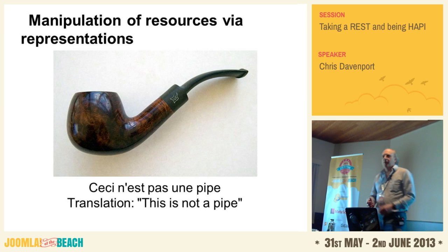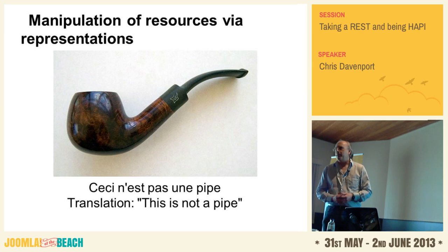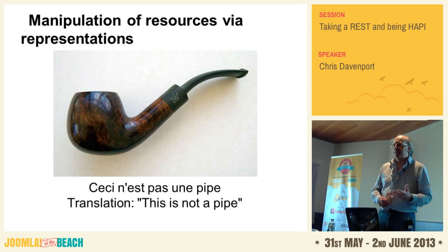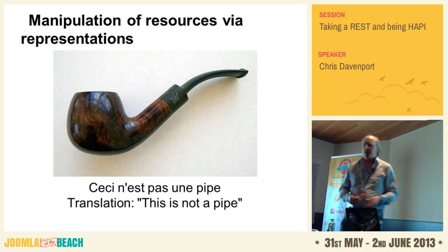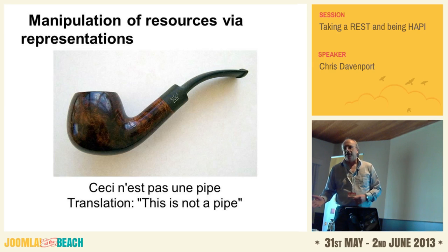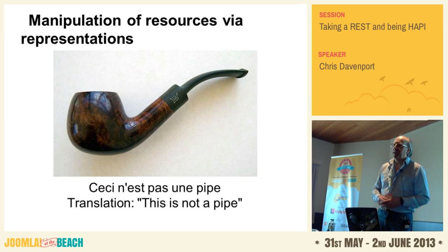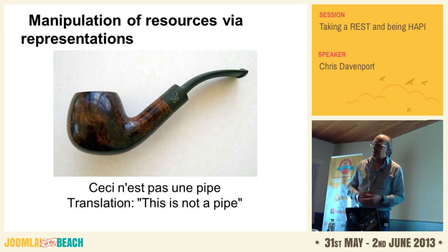You manipulate resources via representations. This is not a pipe — it's a representation of a pipe, an image of a pipe. We manipulate articles on a Joomla site not directly, but through representations. So you do a GET request on a Joomla article, it sends you a representation of that article, you change it, you POST it back again — that updates the article. But you're always working through these representations.